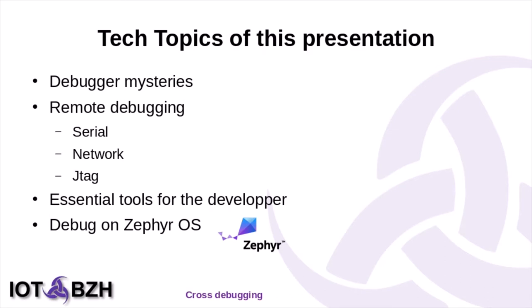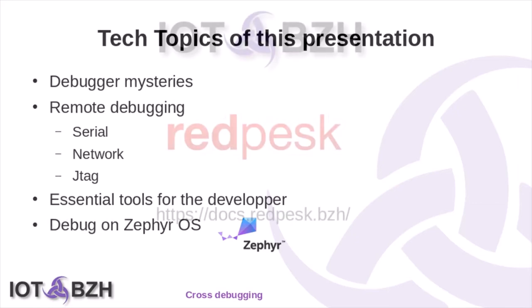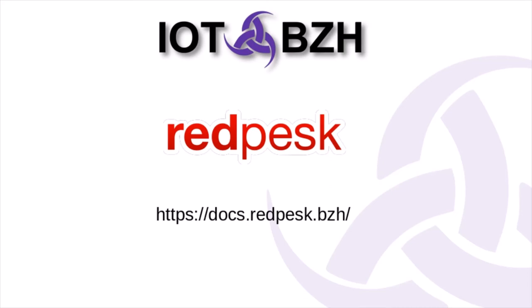The issues addressed in this talk are obviously the remote debugging, but also we will have a deeper look at debugger internals. For those who have ever wanted to know how a debugger works, it will probably be of interest. At the end of the talk, I also cover some essential tools for developers like LTTNG and Valgrind, and we will see how Zephyr OS works and what kind of debug it offers.